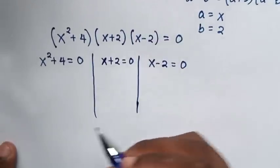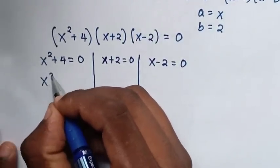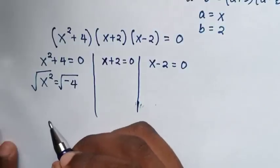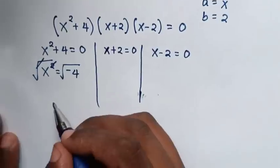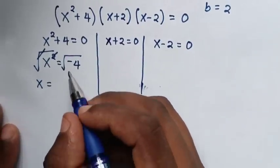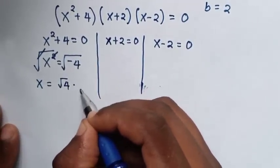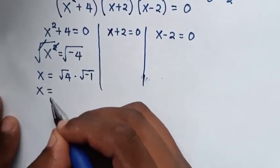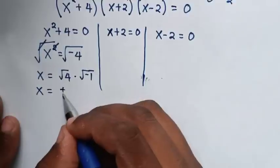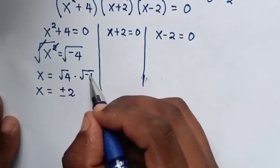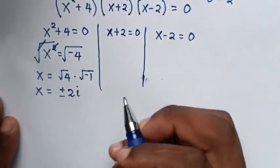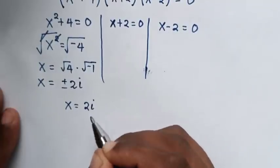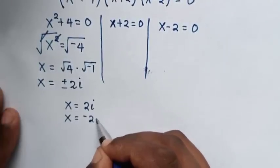To solve x² + 4 = 0, we move 4 to the right side to get x² = -4. Applying the square root to both sides, the square cancels, giving x = ±√4 · √(-1). Since √4 = ±2 and √(-1) = i, we get two complex roots: x = 2i and x = -2i.